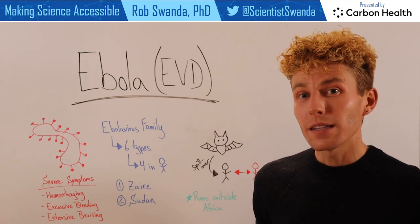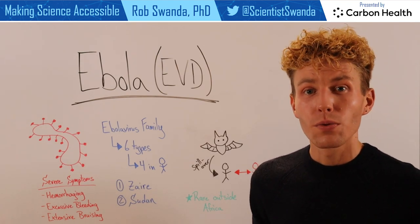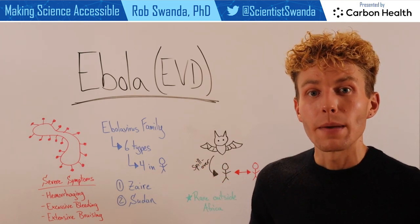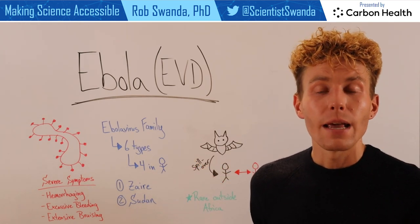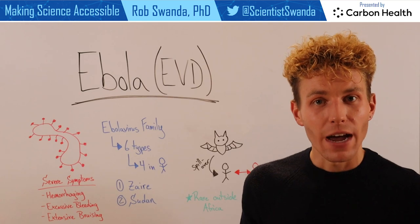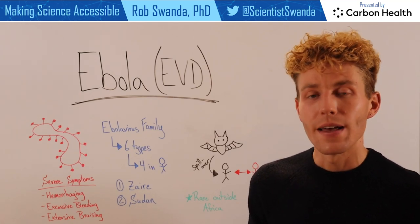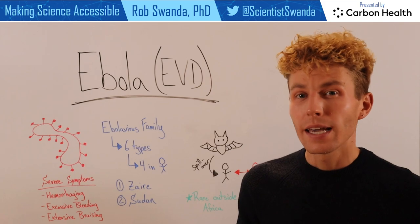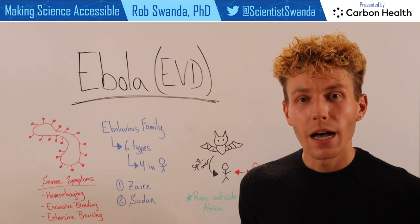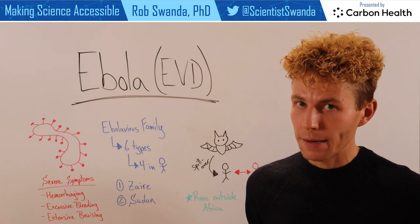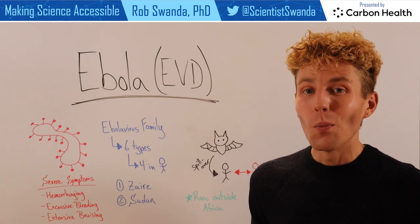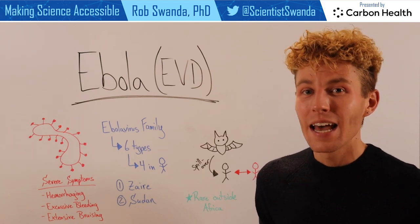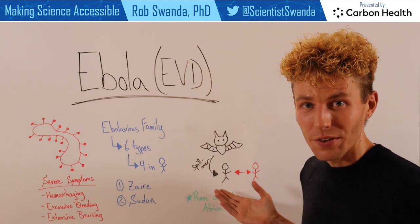Typically, an individual is infected through a spillover event — coming from animals in the wild that are then able to pass that virus on to individuals. That's usually when an individual comes in contact with contaminated blood or flesh of that animal. But once an individual is infected, they could then pass that Ebola virus on to others.